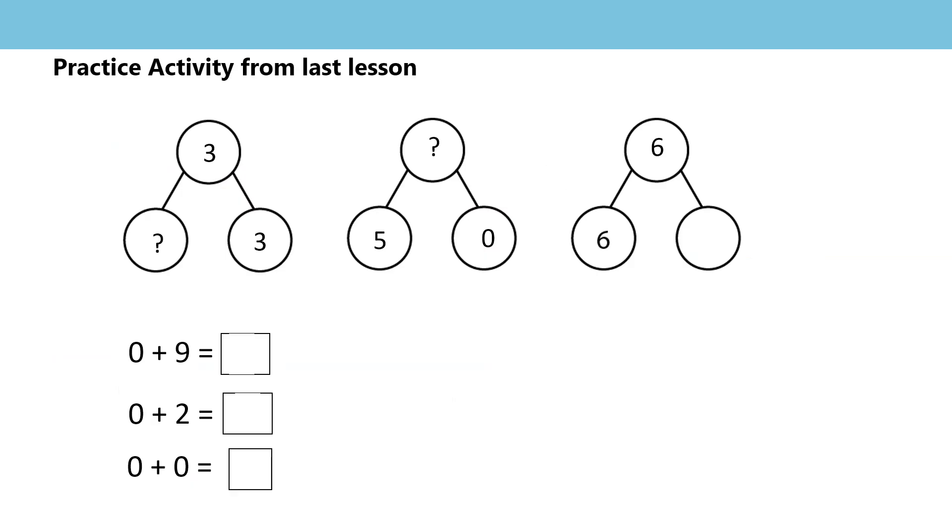In your last lesson, you were asked to look at these questions. Let's go through these together. First of all, the whole is 3 and one of the parts is 3, so the missing part should be 0. When we add 0 to a number, the number remains unchanged. This time we have 5 and 0 as parts, so the whole will be 5. And finally, we have 6 as a part and as a whole, so we would need to add 0 to the 6 so that the number remained unchanged.